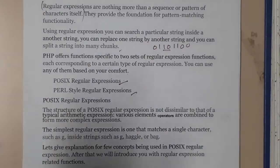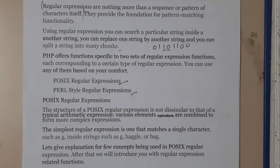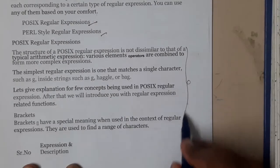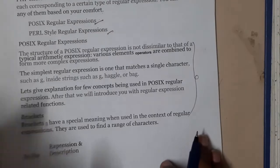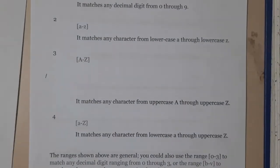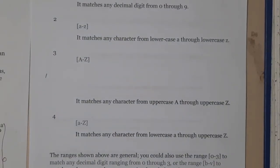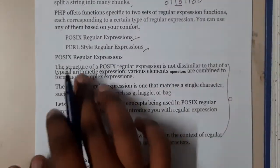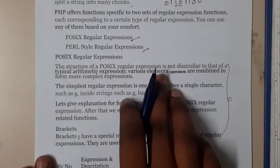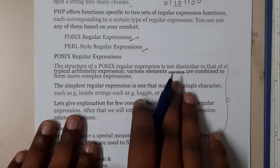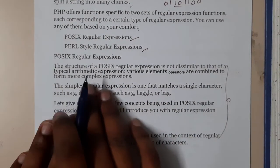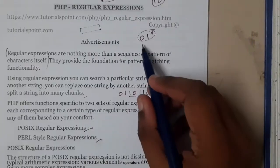I'll try to give maximum information about these two things. Please make sure that you are reading the theory properly, because in examination, explaining in theory gets you better marks. The structure of a POSIX regular expression is not dissimilar to that of a typical arithmetic expression — various elements and operators are combined to form a more complex expression.